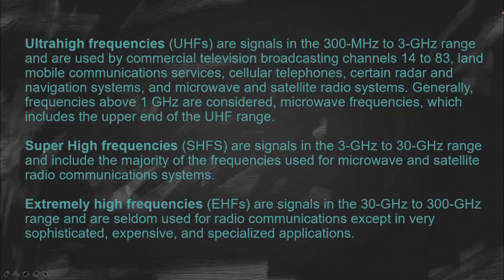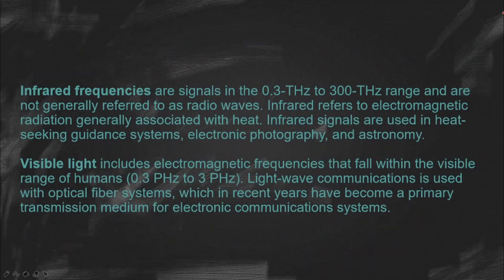Next naman is the super-high frequencies or SHFs which are signals in the 3 GHz to 30 GHz range and include the majority of the frequencies used for microwave and satellite radio communication systems. And the next one is the extremely high frequencies or the EHFs which are the signals in the 30 GHz to 300 GHz range and are seldom used for radio communications except in very sophisticated, expensive, and specialized applications.